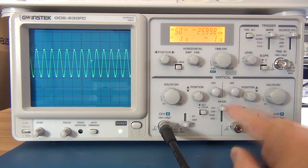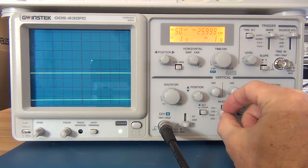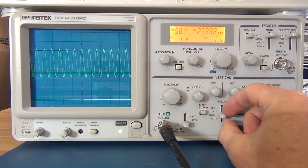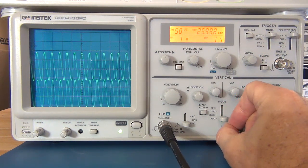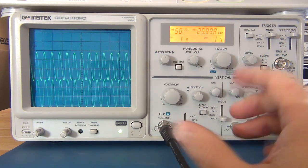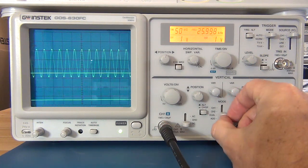We've then got a mode button which gives us, you can choose just channel 1, just channel 2, or both channels. Or you can add channel 1 and channel 2. You've also got a channel invert if you want to do subtraction as well, if you're doing differential measurements.